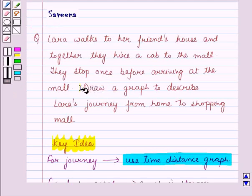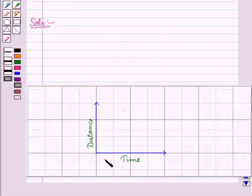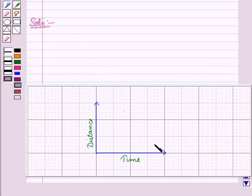Now we have to draw a graph to describe Lara's journey from home to shopping mall. And from key idea, we know that for journey, we use time distance graph. So as we have to describe a journey, we will make use of time distance graph. And here we will take distance on vertical axis and time on horizontal axis.